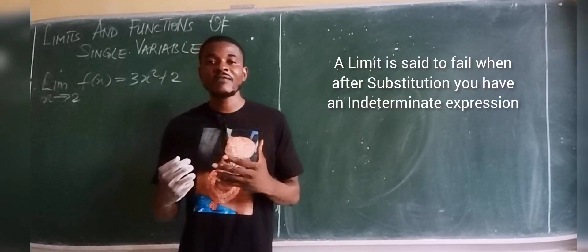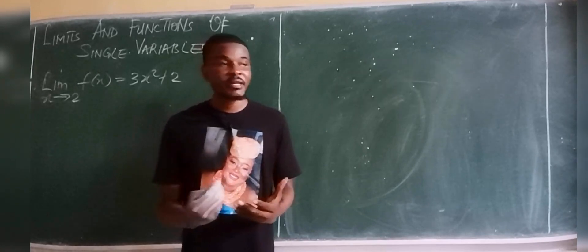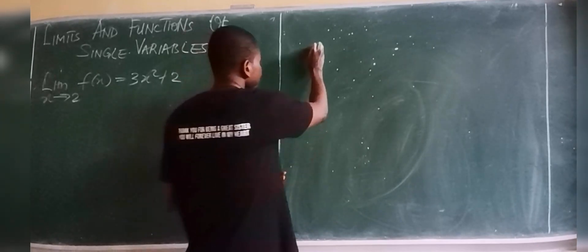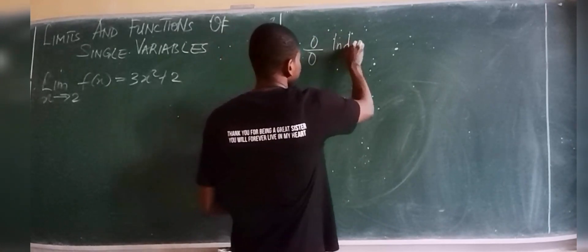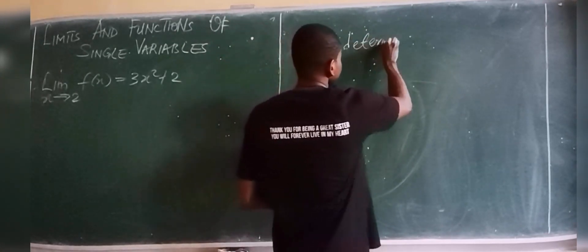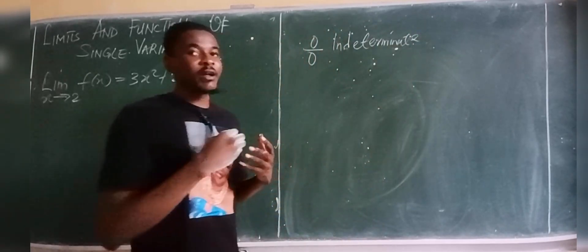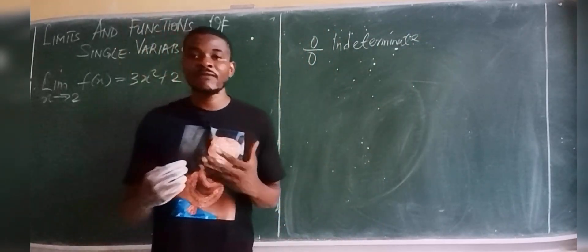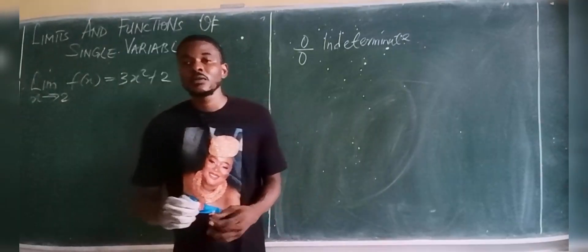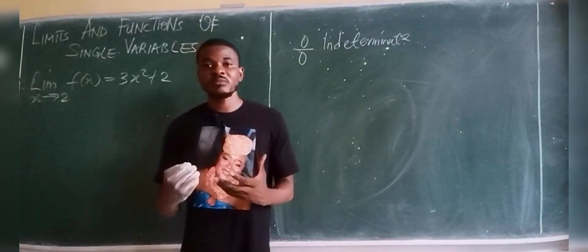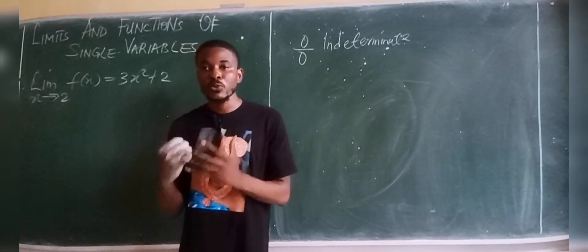A limit is said to fail when you have an indeterminate expression. An indeterminate expression is simply an expression that gives you zero divided by zero. So when you evaluate a limit problem and you get zero divided by zero, that is an indeterminate expression.